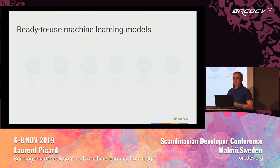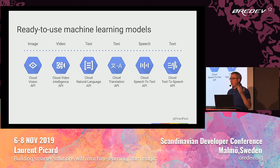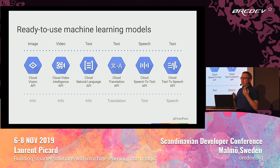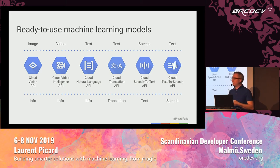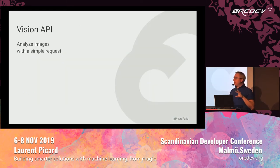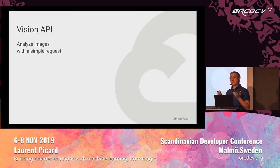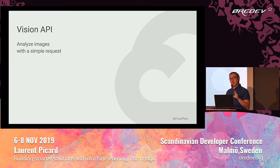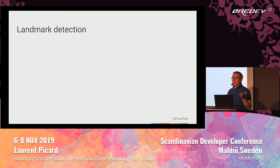First, with the APIs. Input can be text, pictures, videos, even speech, and from that you get information — sometimes the information is the input transformed somehow. I very much like to start with the vision model, because as a student in the 90s we were trying to understand what was in a picture using edge detection with convolution matrices. It kind of worked with some pictures, but as soon as we'd use new pictures, it just failed. Machine learning is the solution for such problems.